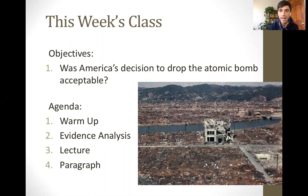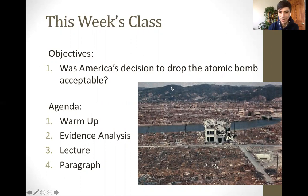This week's class is a continuation of last week's class. We are still trying to understand if America's decision to drop the atomic bomb on Japan was acceptable. We've got a picture of the destruction of Hiroshima shown right here — basically the entire city is flattened. This happened in Nagasaki too. Was that an acceptable thing for the United States to do?